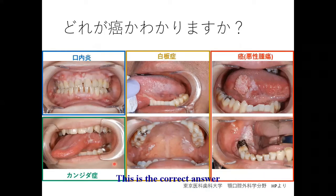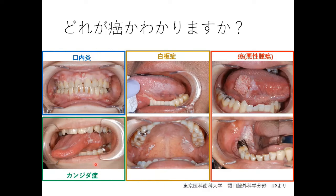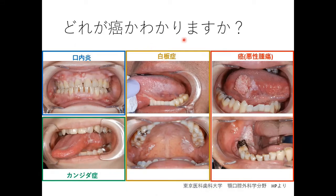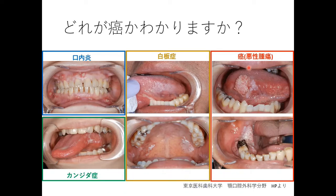This is the correct answer. The upper left is a mouth ulcer that everyone has experienced. The lower left is a candida lesion caused by a type of mold in the mouth. The two pictures in the middle are leukoplakia — white spots on the tongue and the gum. And the two pictures on the right are cancer.